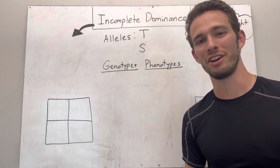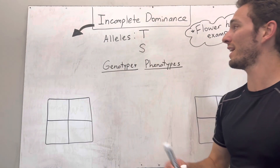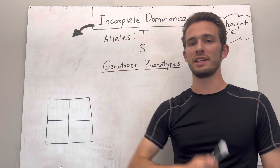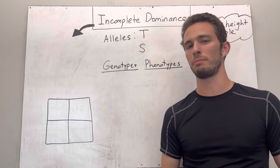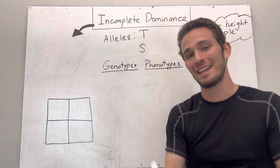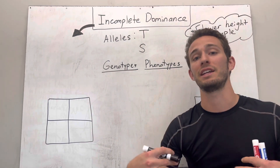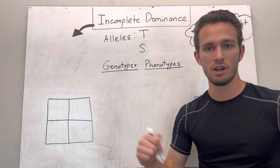Hey everybody, Mr. J here, and on this third segment of genetics, we are going to be talking about incomplete dominance, which is also relatively simple. I'm going to give you an example using flower height, so how tall flowers are going to get.